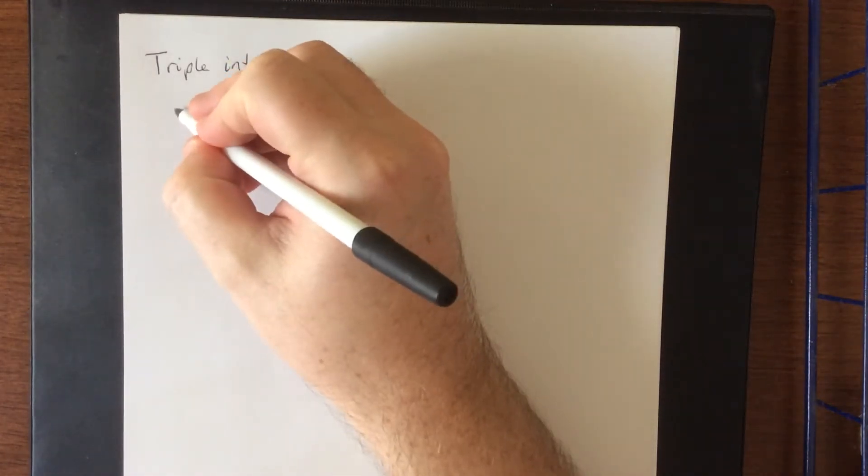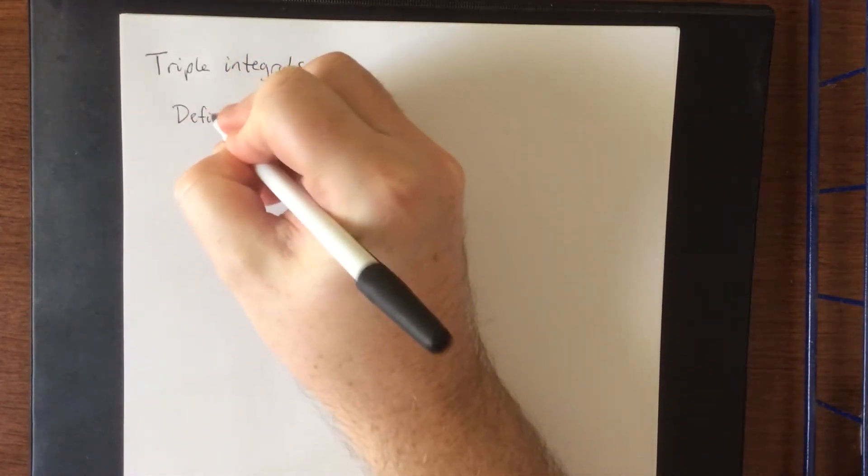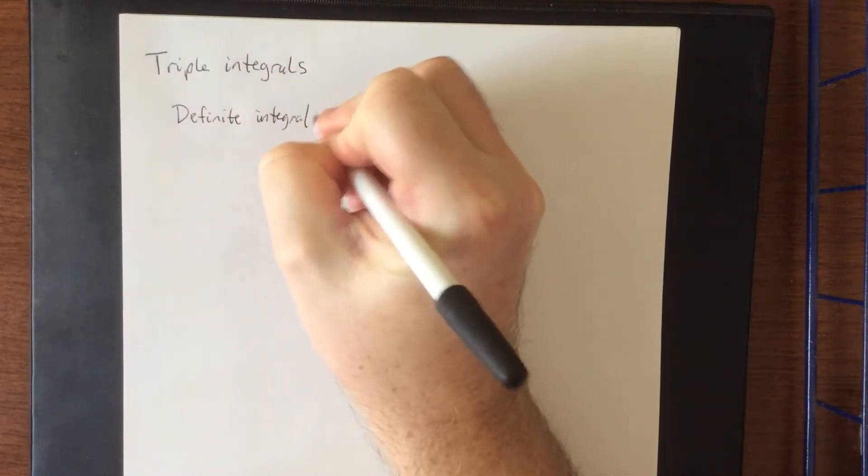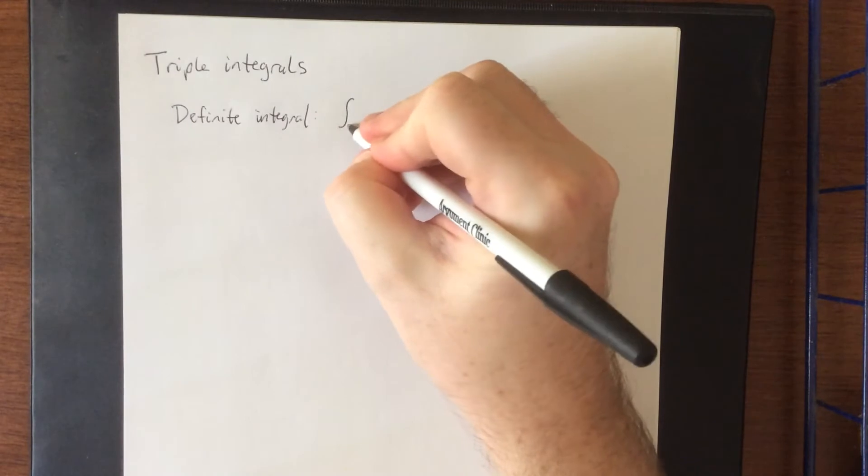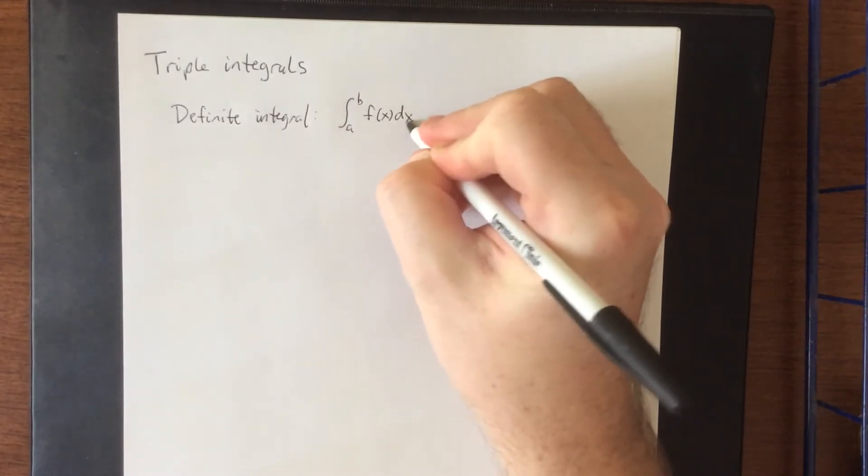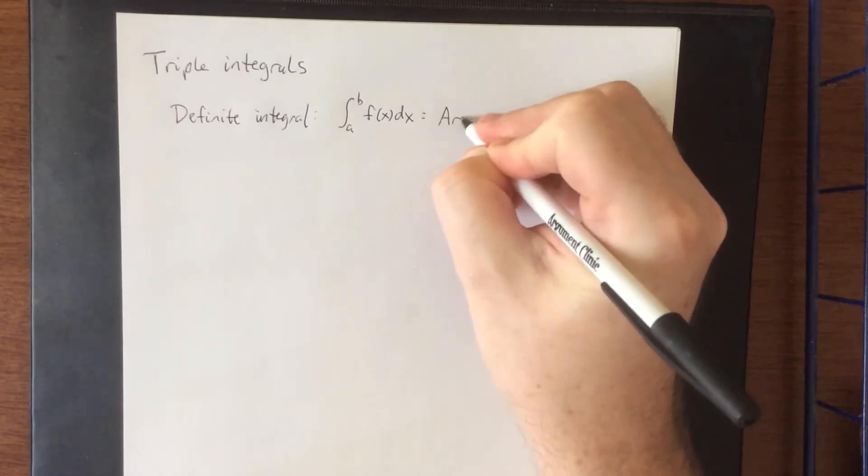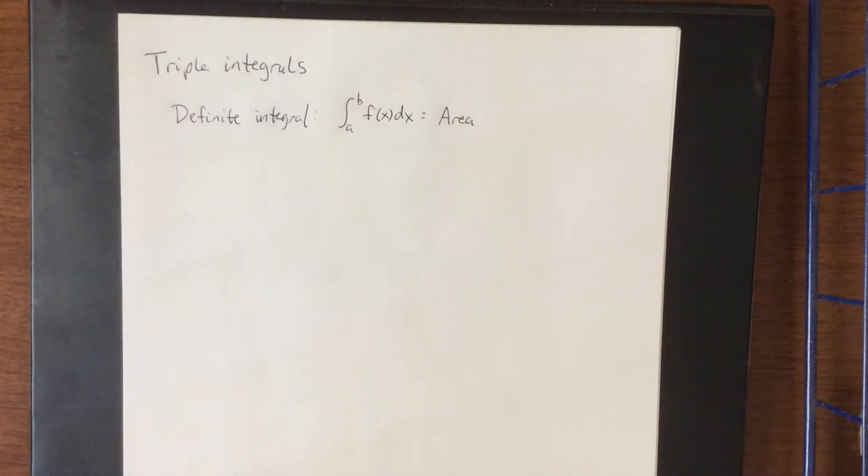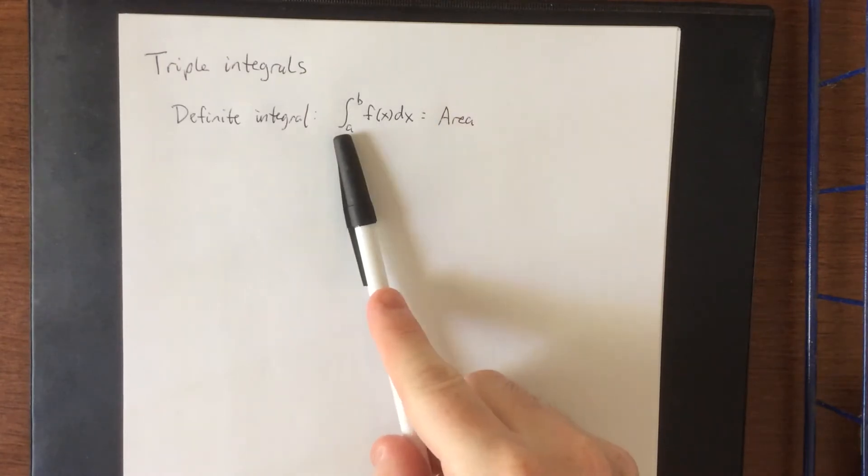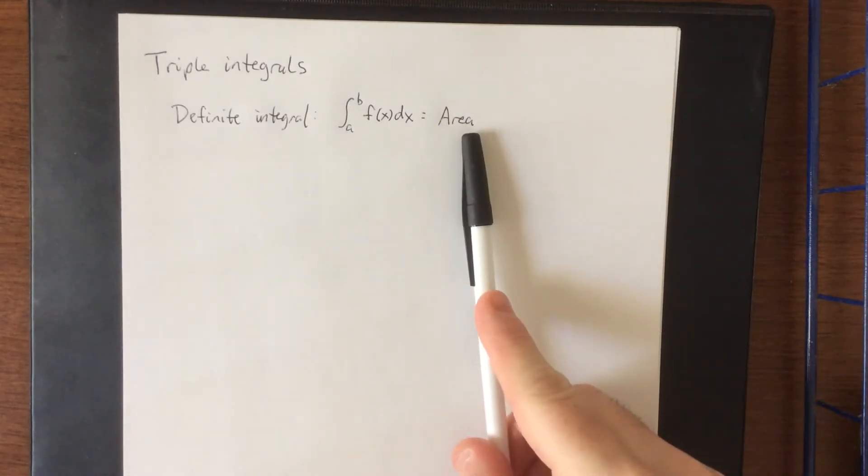So it all started with the definite integral. The definite integral said let's take an interval from a to b and a function of one variable and let's turn this into an area. So take one function, take one integral, you have a two-dimensional quantity.